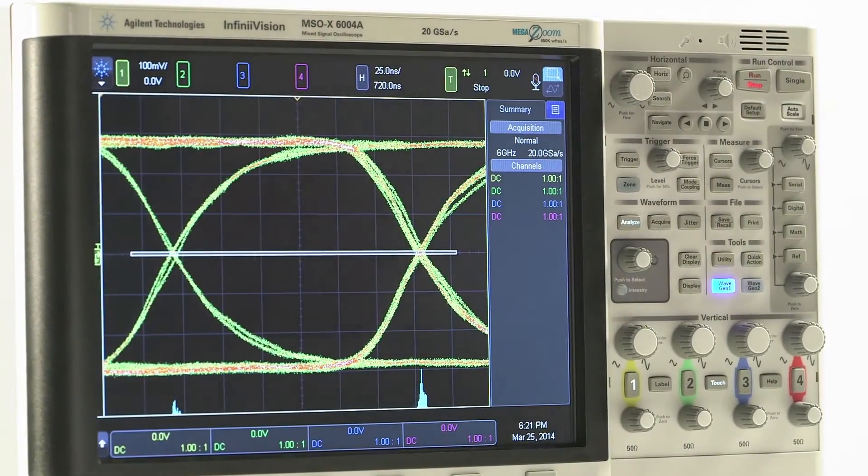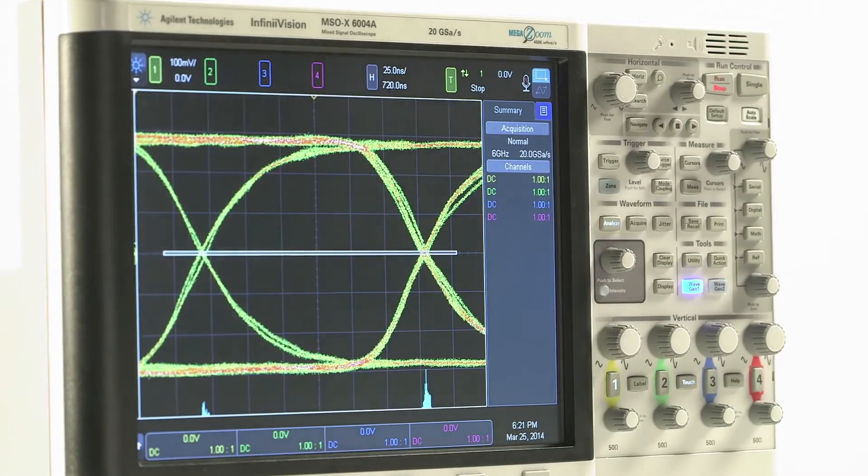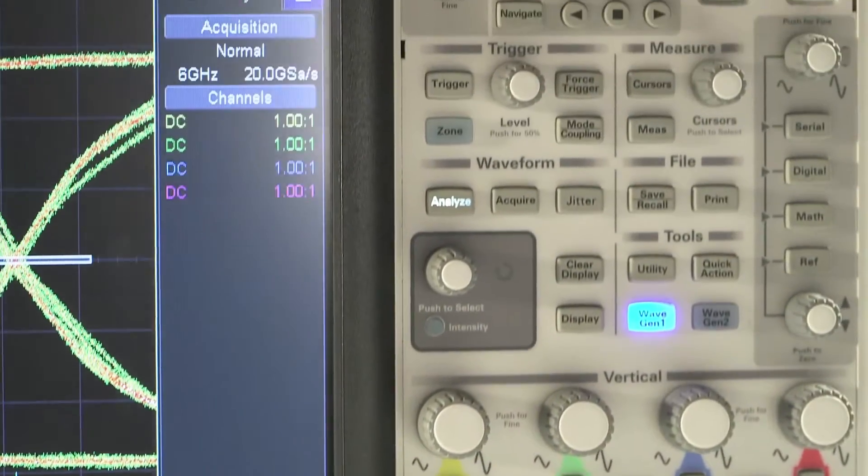With the new InfiniiVision 6000x series oscilloscope, you'll get the world's best price performance for bandwidths up to 6 GHz.